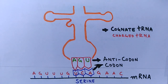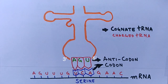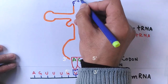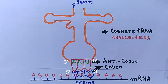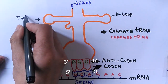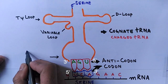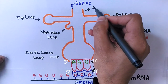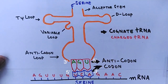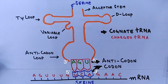So the three-base sequence on tRNA is the anticodon, and the three-base sequence on mRNA is the codon, and both are complementary to each other. The anticodon is read from three-prime to five-prime, while the codon is read five-prime to three-prime. On the tRNA molecule, there are different loops: the D-loop, the T-psi loop, the variable loop containing mostly pseudobases, and the anticodon loop containing the anticodon sequence. On the upper side is the acceptor stem where the amino acid is attached.